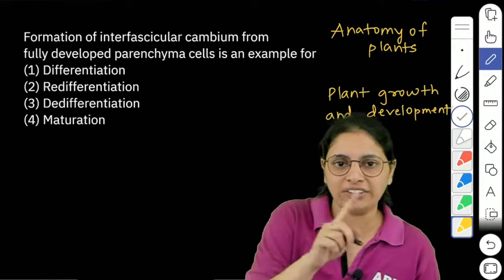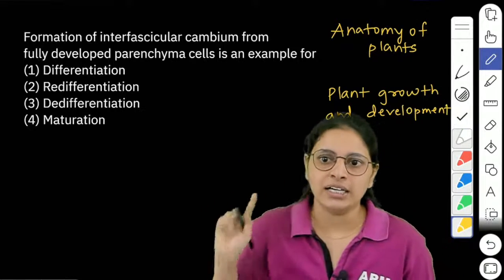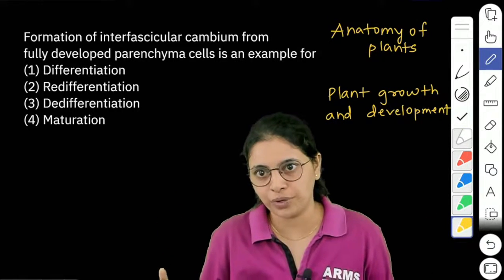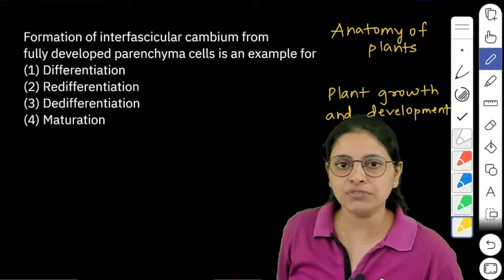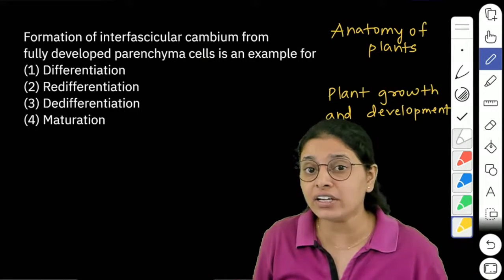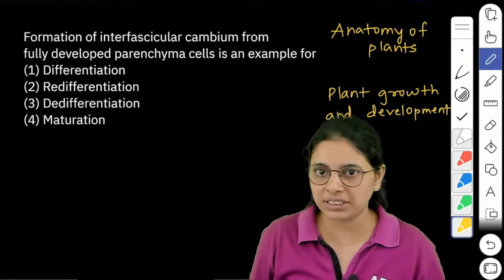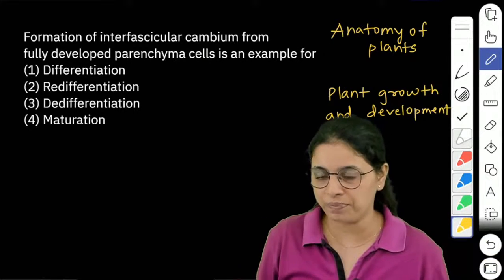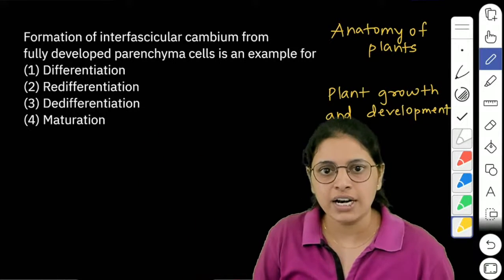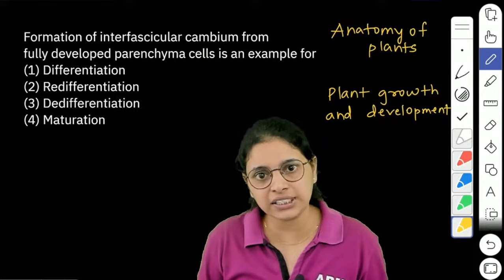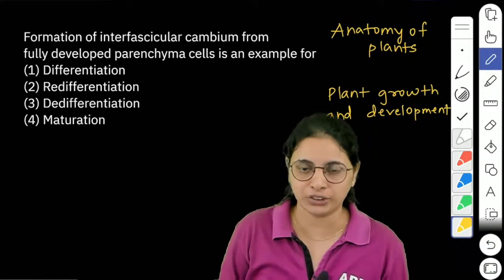In this chapter also you have a particular topic: differentiation, de-differentiation and re-differentiation. This basis you have solved by RMC. So let's read the question first. Formation of interfascicular cambium from fully developed parenchyma cells is an example for, and these are the options: differentiation, re-differentiation, de-differentiation, and maturation.